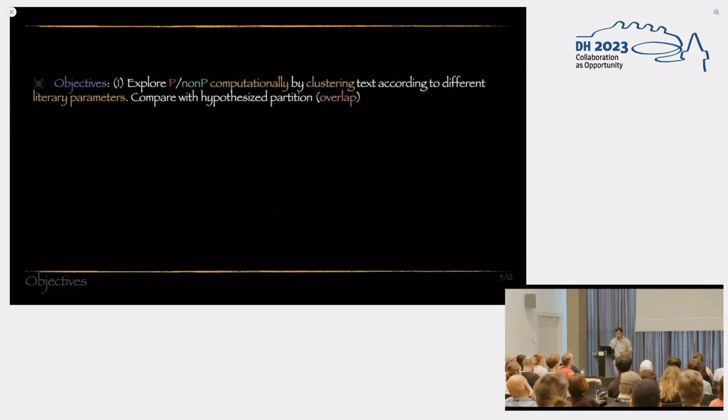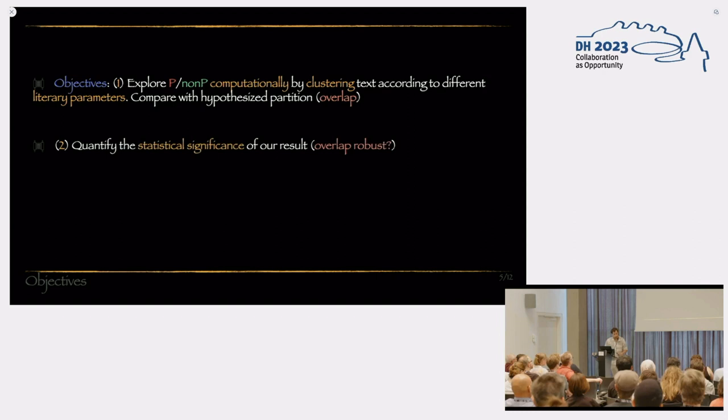Now, the objective of the study, first of all, is we want to try to explore this hypothesized distinction computationally by using unsupervised learning, clustering, according to different literary parameters, which I will detail in just a moment. And then, we want to compare the hypothesized partition of P and non-P, the red and green, with the unsupervised partition, and see how big the overlap between the two is. The second objective would be to quantify the statistical significance of our result.